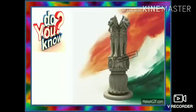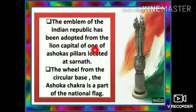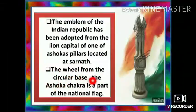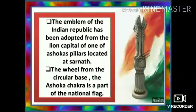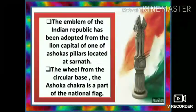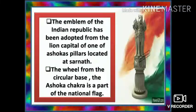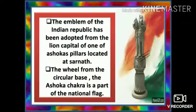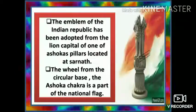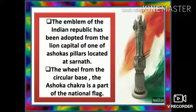Do you know why it is named the Ashoka Chakra? The emblem of the Indian Republic has been adopted from the lion capital of one of Ashoka's pillars located at Sarnath. The wheel from the circular base, the Ashoka Chakra, is a part of the national flag. The Ashoka Chakra is a depiction of the Dharma Chakra, a wheel represented with 24 spokes. The national emblem has four lions, one hidden from view, symbolizing power, courage and confidence. In Buddhism, the animals represent four faces of Buddha's life and the wheel means enlightened rule.